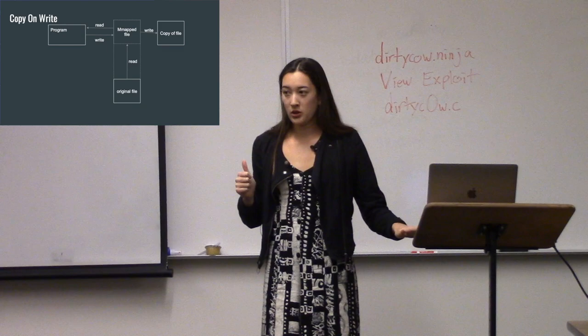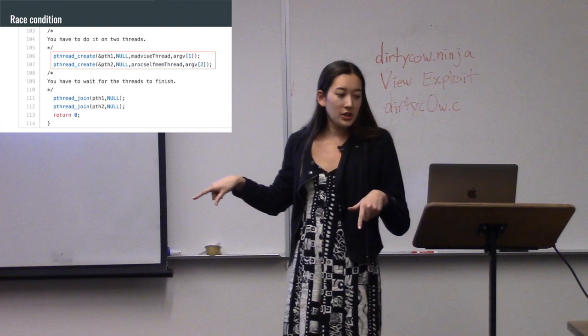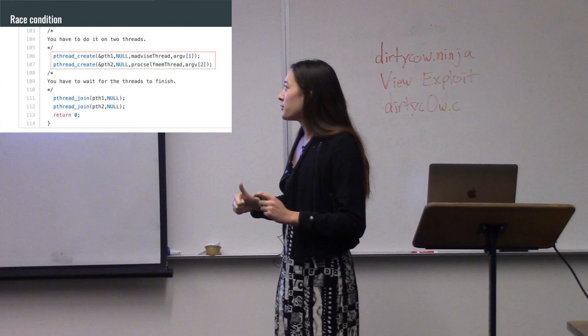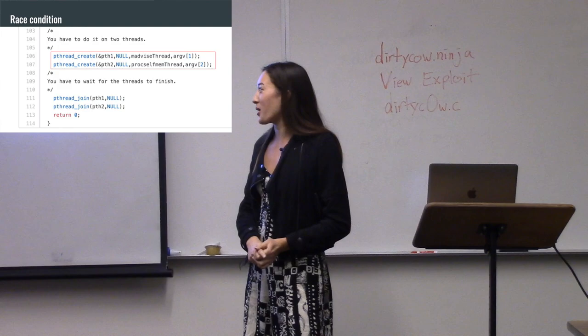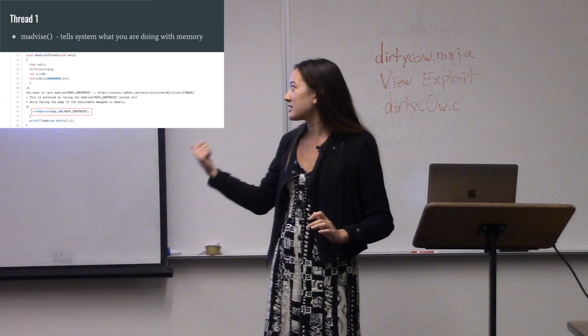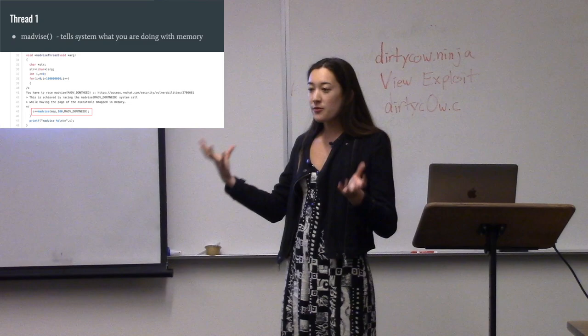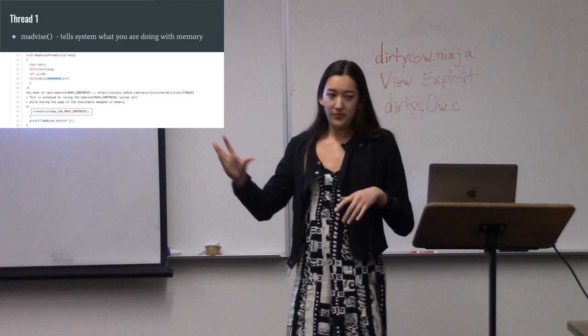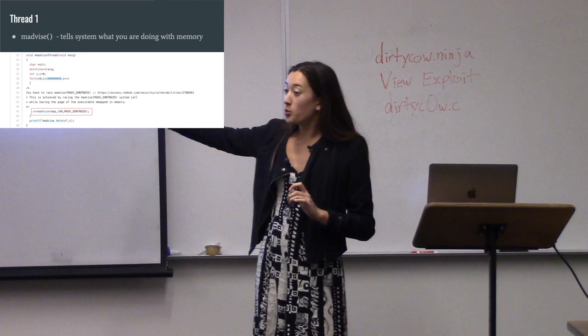This is where we get our race condition. A race condition is when two processes — in this case two pthreads — interact in unexpected ways. You have your mAdvise thread and your procself-mem thread. First, you have mAdvise, a system call where you tell the kernel what you're doing with this block of memory — specifically, your mapped memory segment, just the first hundred bytes or so. This one is saying mAdvise DONTNEED, which says: hey kernel, I don't actually need this memory segment. You can just throw it out, free everything there. I don't need it anymore.